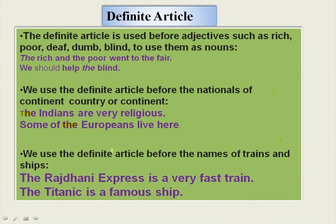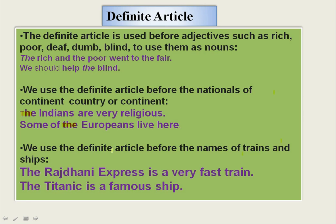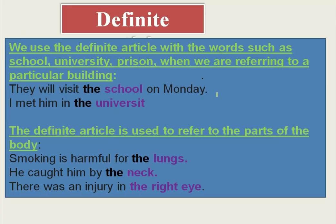We use the definite article before the names of trains, ships, or buildings. 'The Rajdhani Express is a very fast train' — the Rajdhani Express is the name of a particular train, so we use 'THE.' 'The Titanic is a famous ship' — the Titanic is a name of a ship. We also use the definite article before words like school, university, or prison when referring to a particular building. 'They will meet at the school on Monday' and 'I meet him in the university' refer to particular buildings.